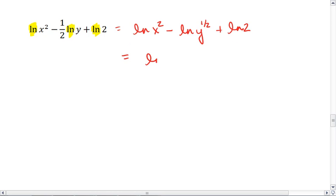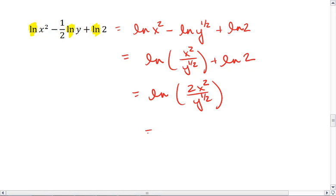So we're going to do ln of x squared over y to the 1 half plus ln of 2, which equals ln of 2 x squared over y to the 1 half. Which can also be rewritten as ln of 2 x squared over the square root of y.